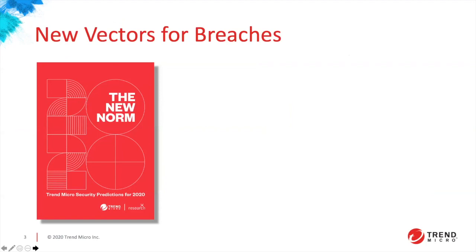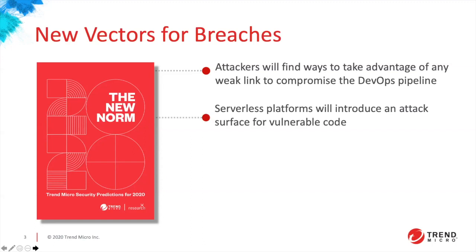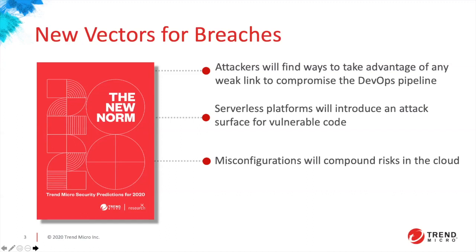We aggregated that data and created a report called the New Norm for 2020, released before 2020. We predicted what would happen in 2020 as it relates to security, software, application, and network. We predicted increased attacks in the DevOps pipeline and serverless platforms. But specifically, misconfigurations will compound the risk in the cloud — that's what we're focusing on in this presentation.